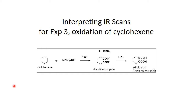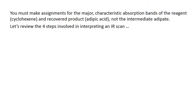Interpreting IR scans for experiment three: the oxidation of cyclohexene. Here's the structure of cyclohexene. Disodium adipate is the intermediate — we did not isolate this because it was water soluble. We acidified it and converted it to adipic acid, which we recovered. So these are the two compounds we want to be identifying in this lab. You must make assignments for the major characteristic absorption bands of the reagent cyclohexene and the recovered product adipic acid, not the intermediate adipate ion.